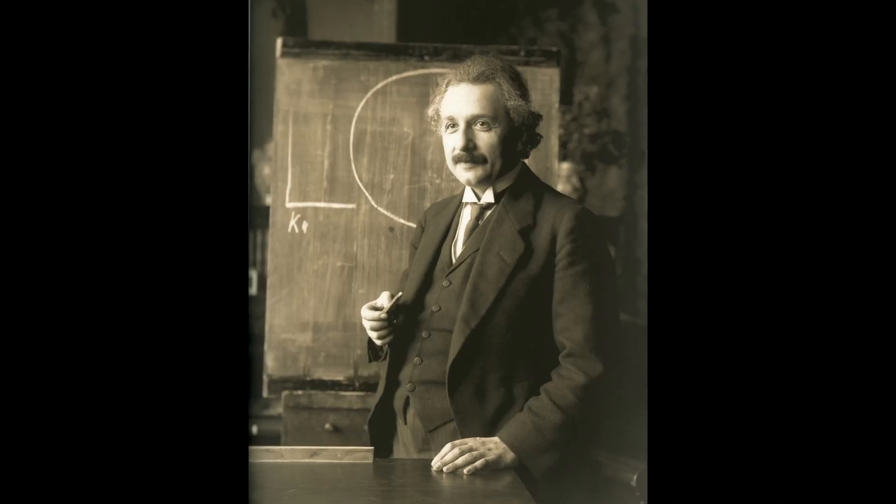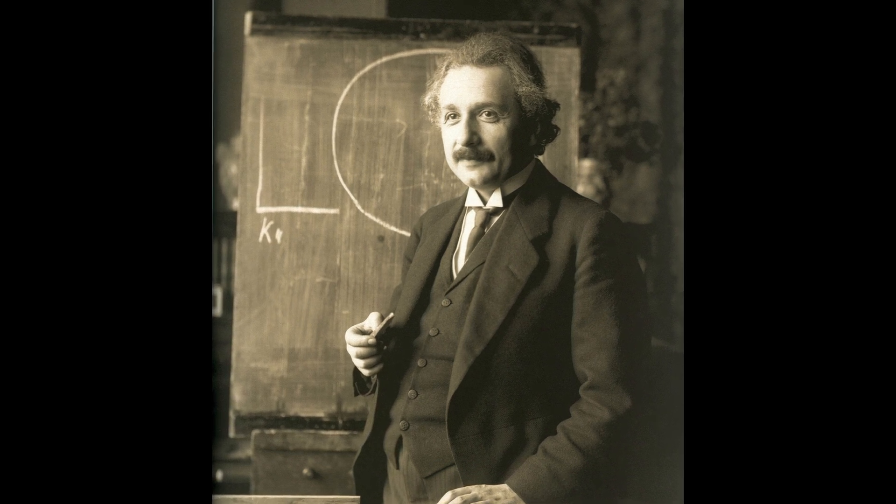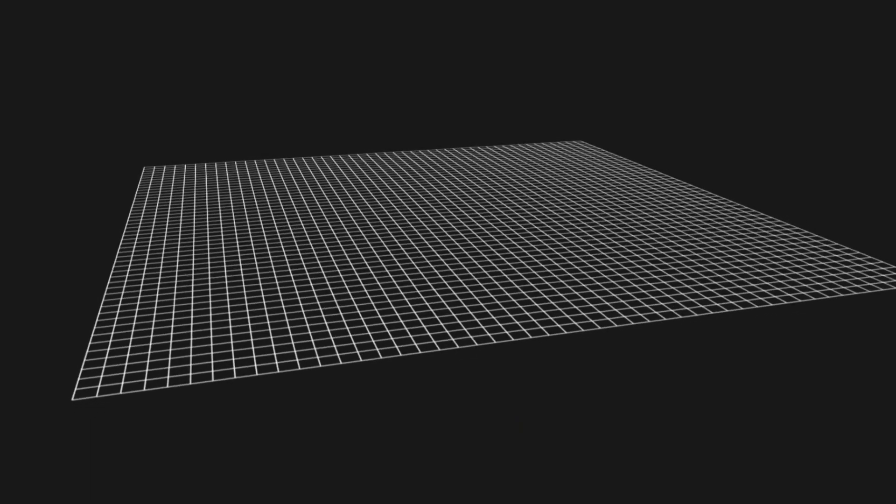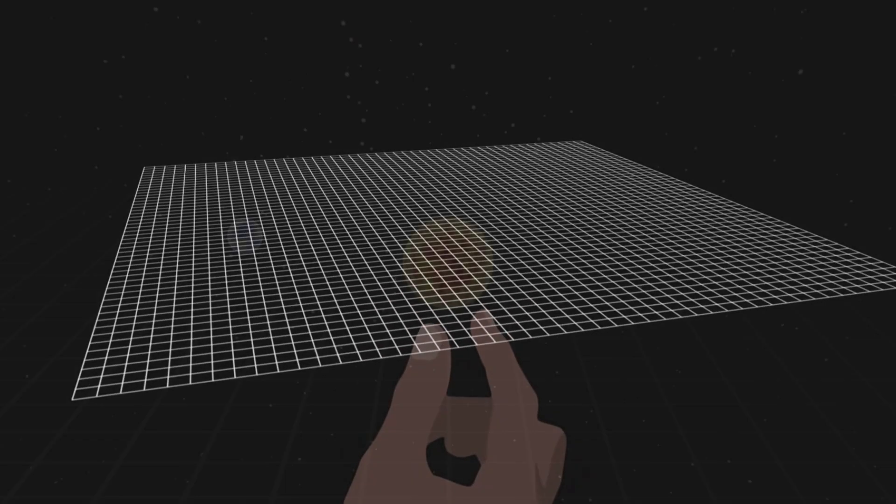Enter Albert Einstein's theory of general relativity, which revolutionized our understanding of gravity in the early 20th century. Instead of seeing gravity as an invisible force pulling objects, Einstein proposed that massive objects warp the fabric of space-time itself.